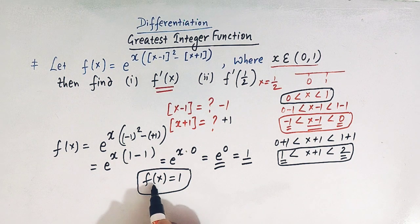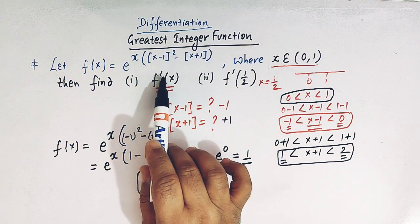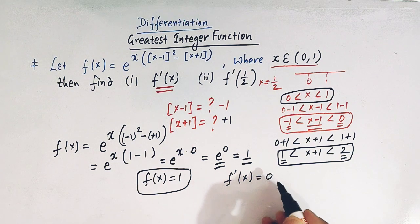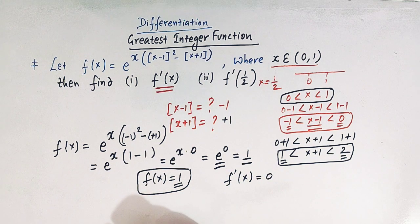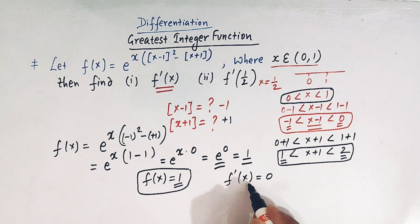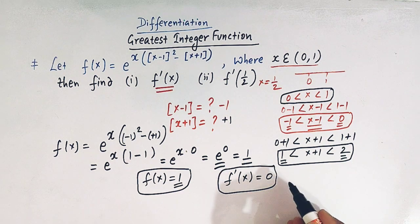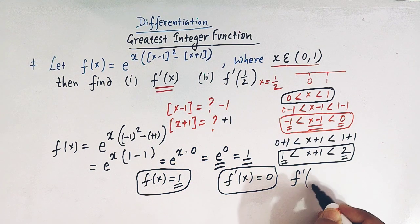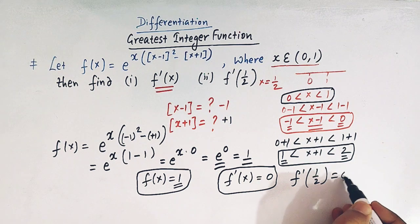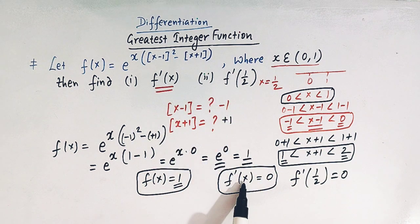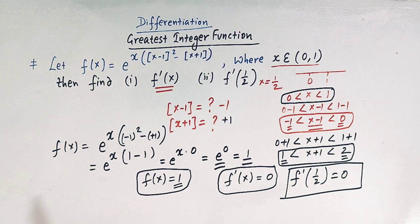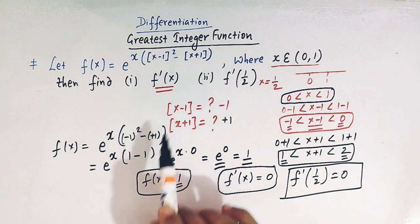Now if we differentiate this function with respect to x to get f prime of x, it is simply 0 because the derivative of a constant function is 0. So f prime of x equals 0, and the value of f prime of half is also equal to 0. This is how we can solve these types of problems.